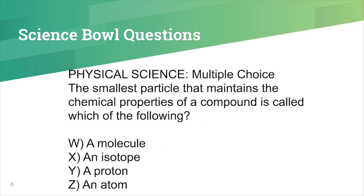Physical science, multiple choice: The smallest particle that maintains the chemical properties of a compound is called which of the following? W, a molecule. X, an isotope. Y, a proton. Or Z, an atom. The answer is W, a molecule.